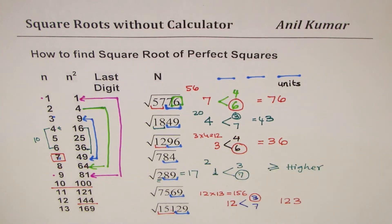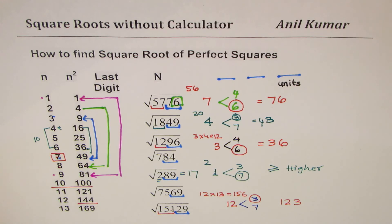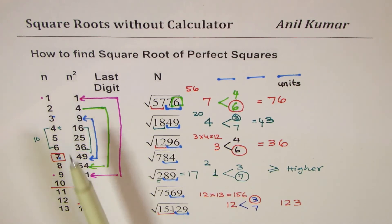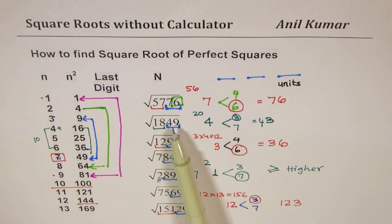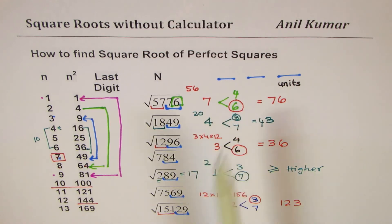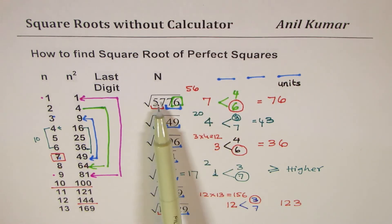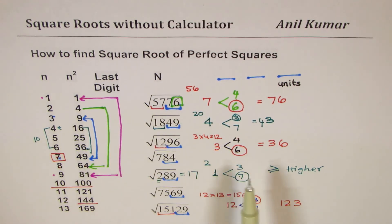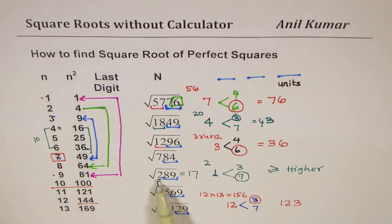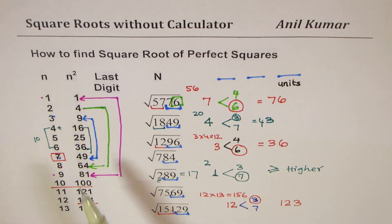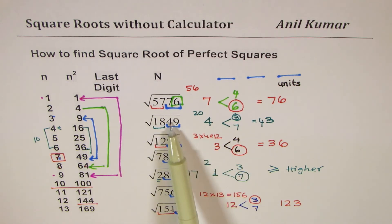That's how you find the square root of perfect squares. You only need to remember the squares of the first 10 numbers. The last digit determines two candidate options; once you fix the tens place, multiply it by the next number. If the left group is higher than or equal to that product, take the higher ones digit; if lower, take the lower ones digit.